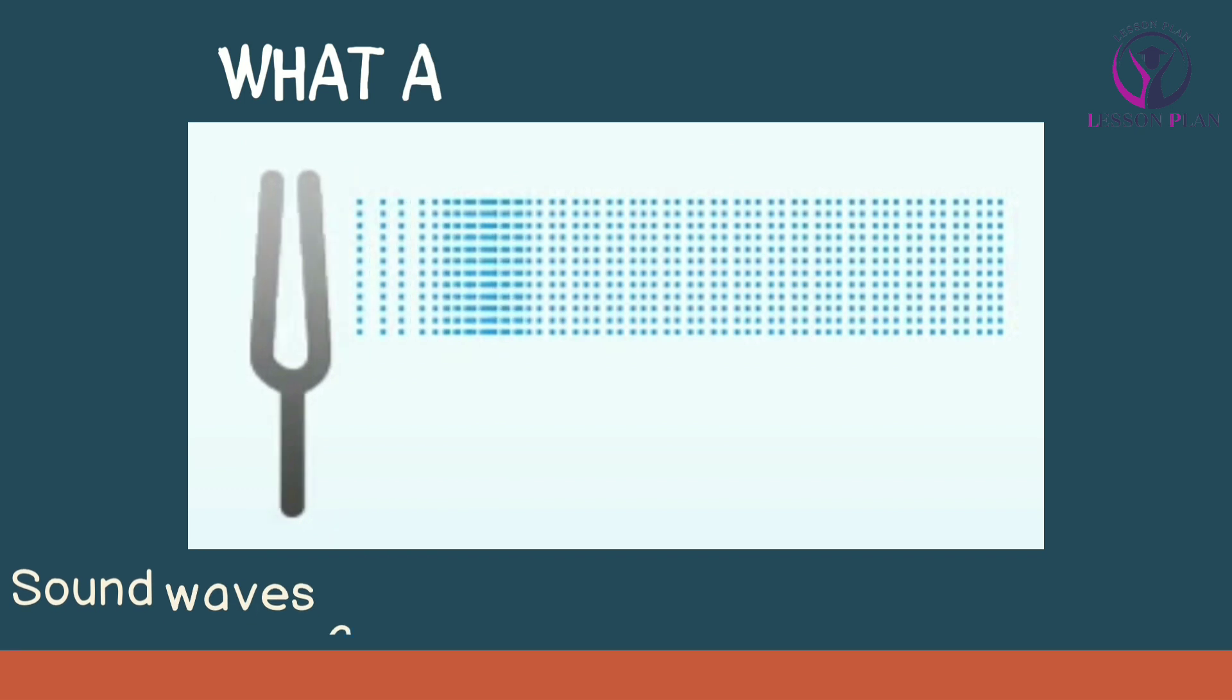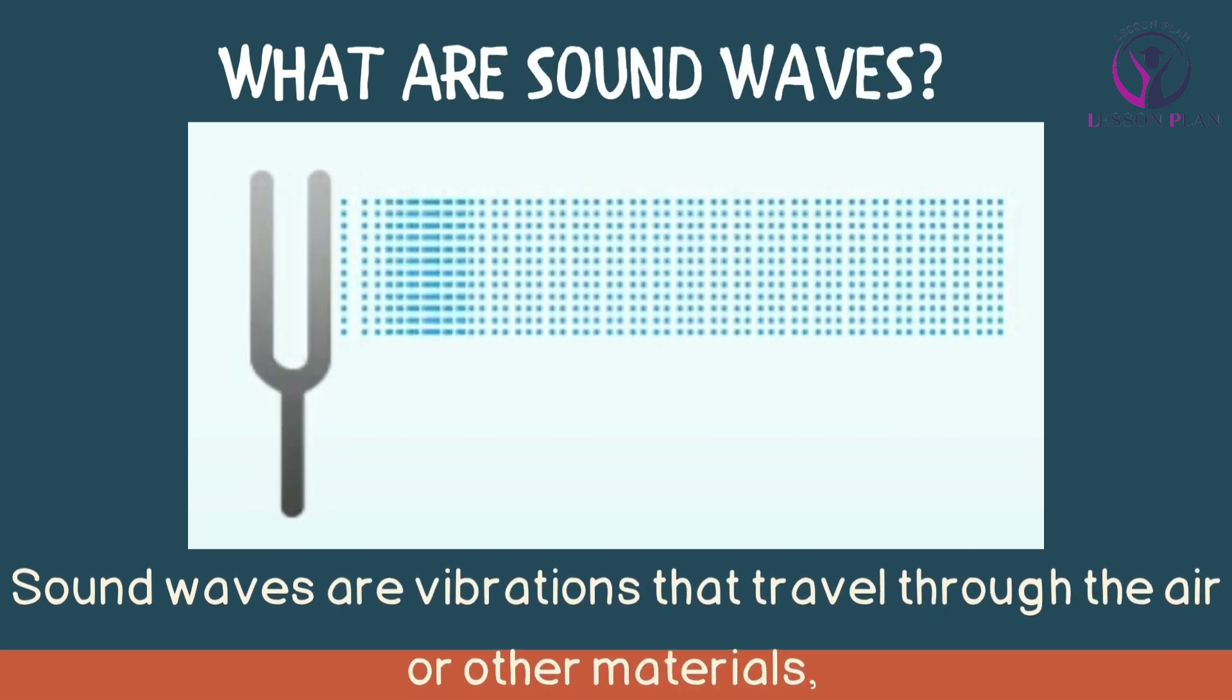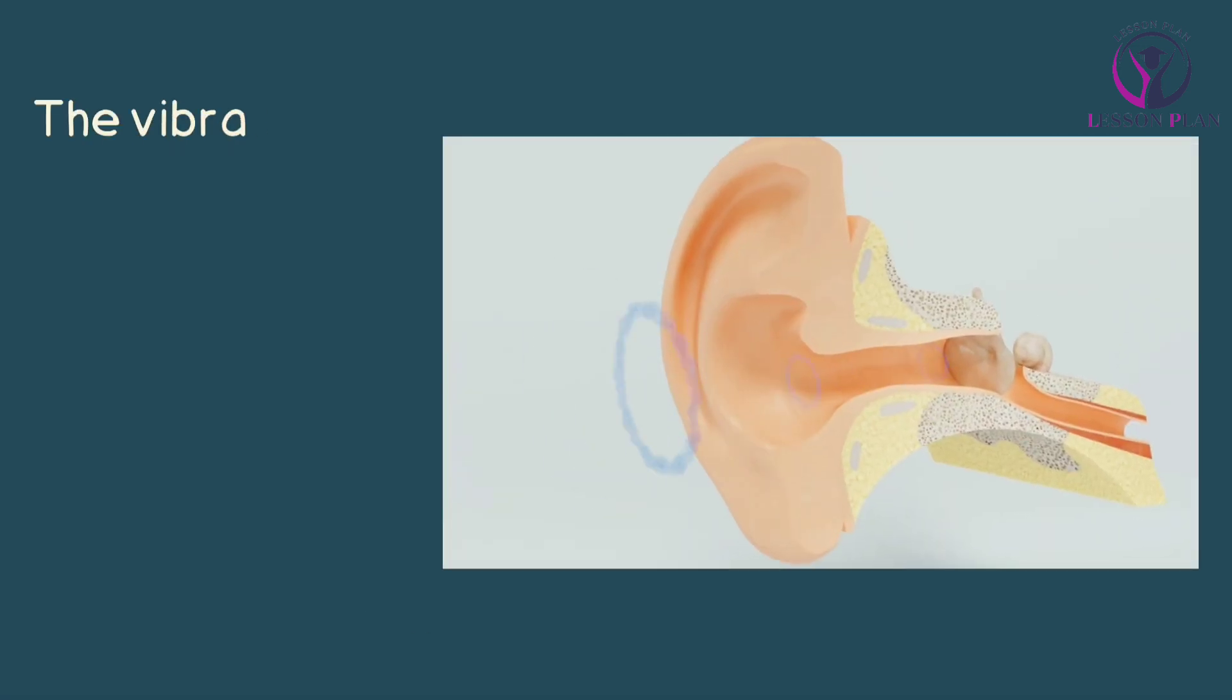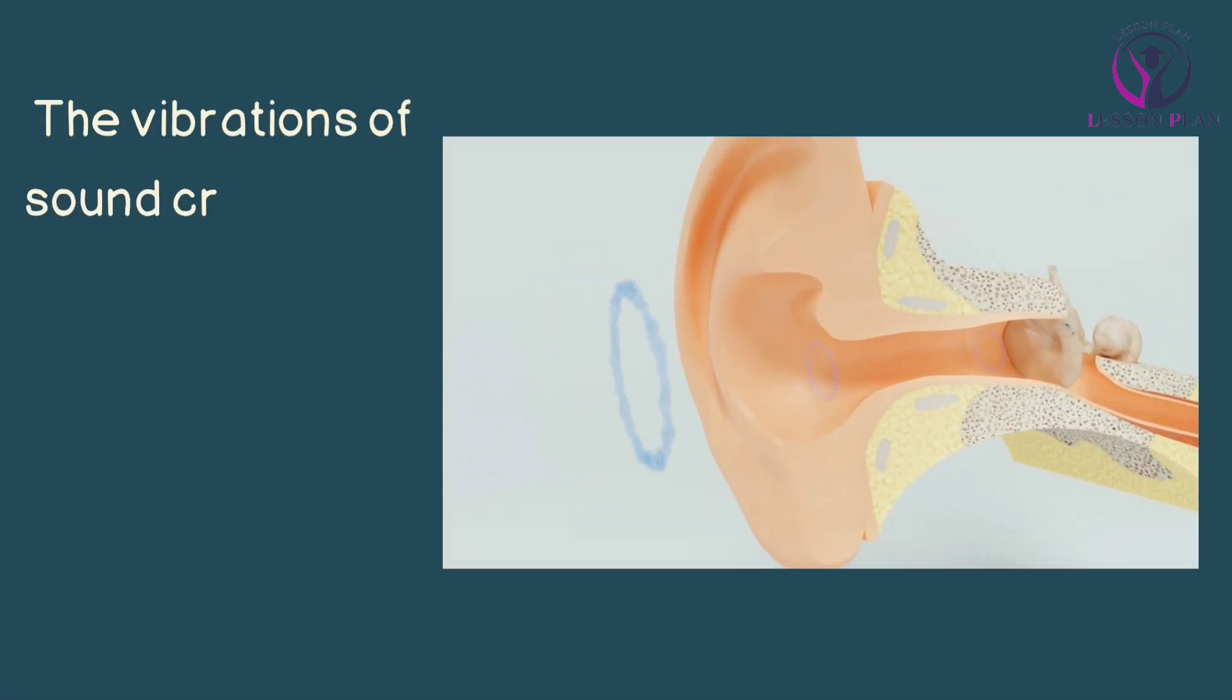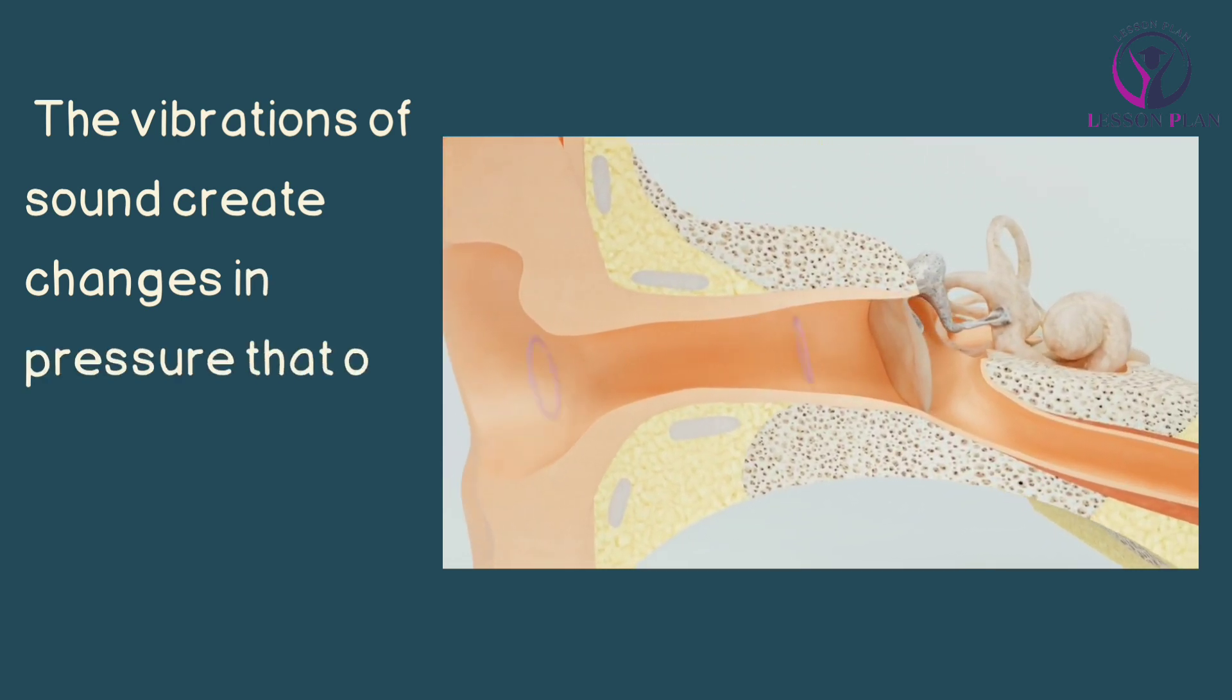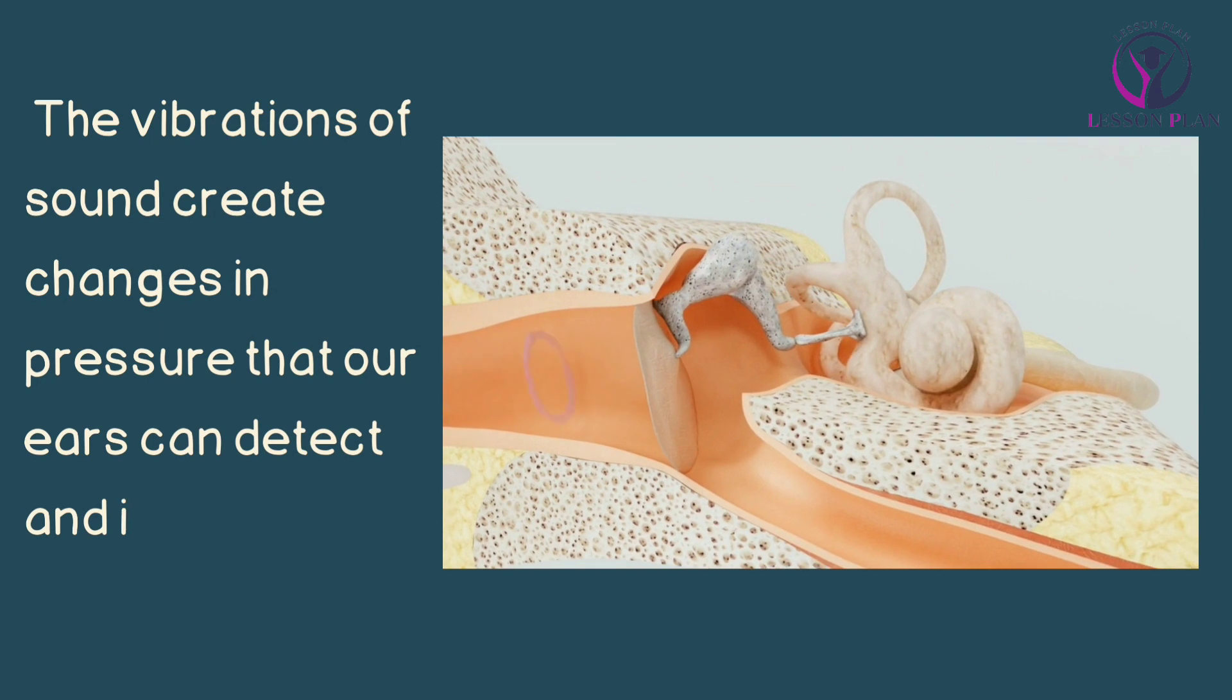Sound waves are vibrations that travel through the air or other materials, such as water or solids. These vibrations create changes in pressure that our ears can detect and interpret as sound. Think of sound waves as ripples in a pond, except instead of water, it's air or other materials that are rippling.